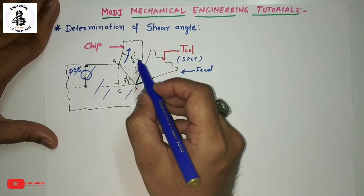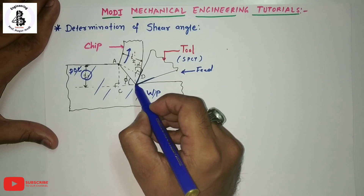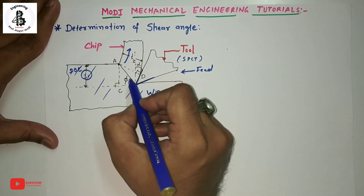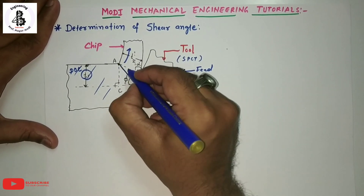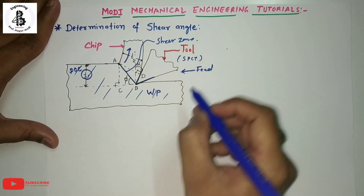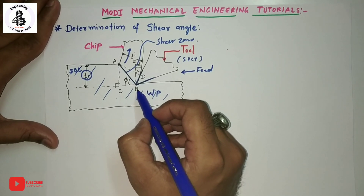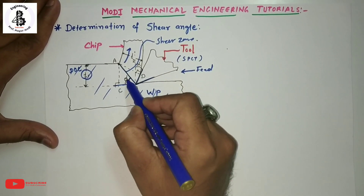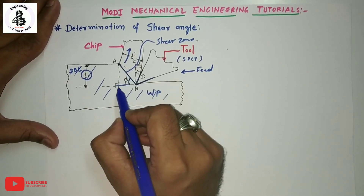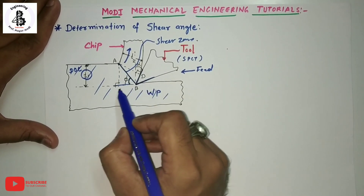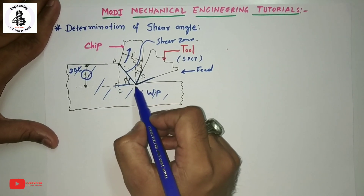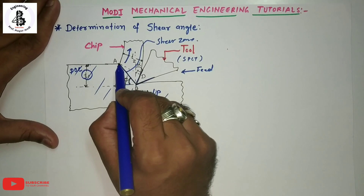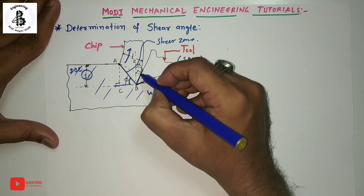As chips are formed during cutting operations, the tip of the cutting tool makes an angle at the shear zone. The line from A to B acts as the shear plane, and that shear plane makes an angle with the horizontal axis called the shear angle phi. The perpendicular distance onto that axis is AC. Triangle ABC makes the shear angle phi.